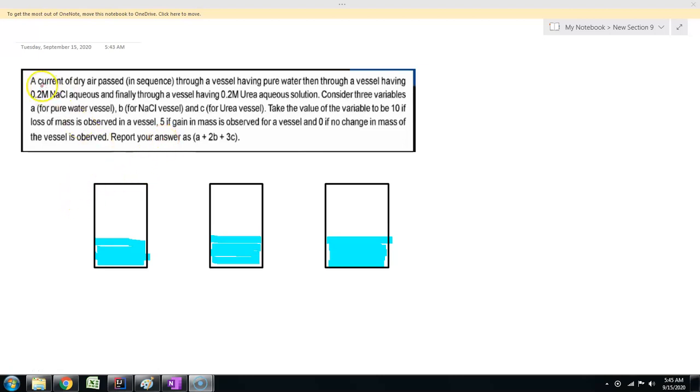In this question, a current of dry air is passed through a vessel having pure water. So the first container contains pure water.